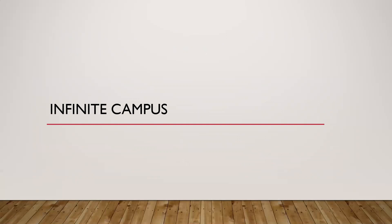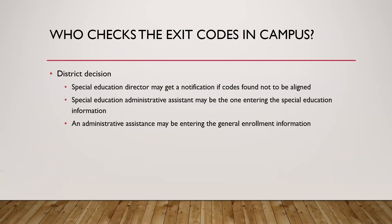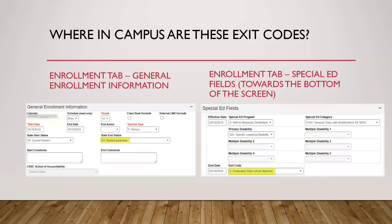Now we're going to look at Infinite Campus and what we need to do. Who checks the exit codes in Infinite Campus in your district? This is a district decision — it may be the special ed director who checks alignment, the special ed administrative assistant who enters the information, or an administrative assistant entering both general enrollment and special ed information.